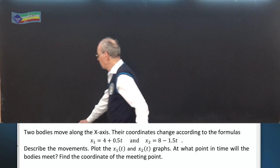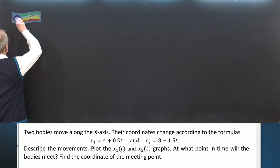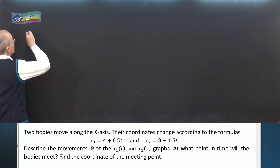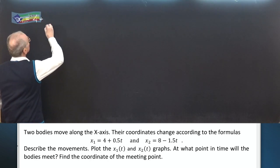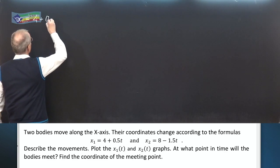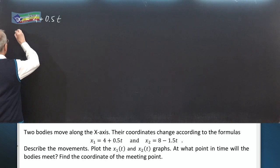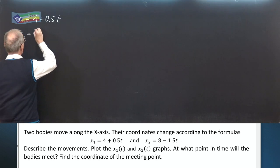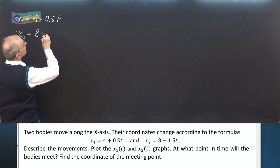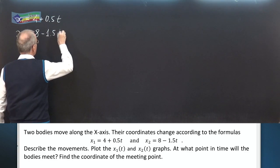The equation of motion of the first body is x₁ equals 4 plus 0.5 times t. x₂ equals 8 minus 1.5 times t.